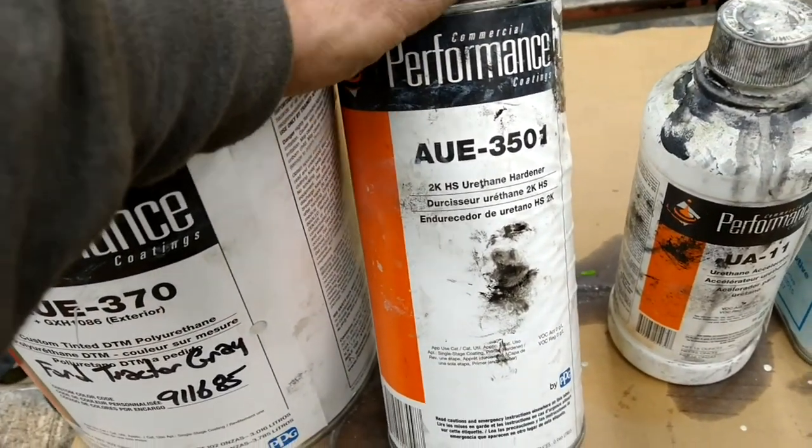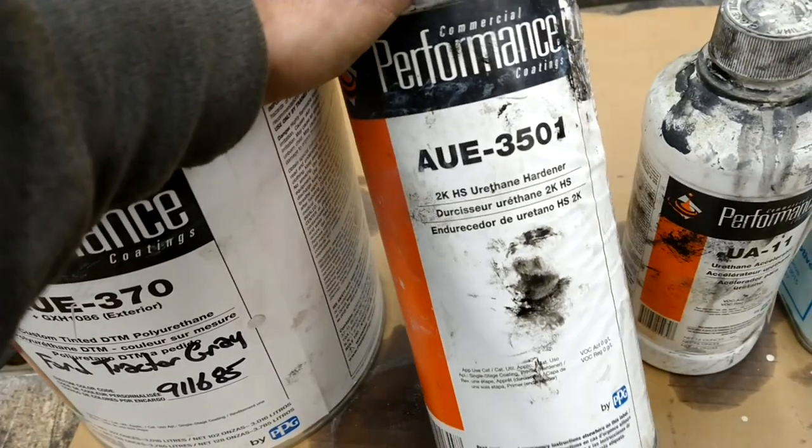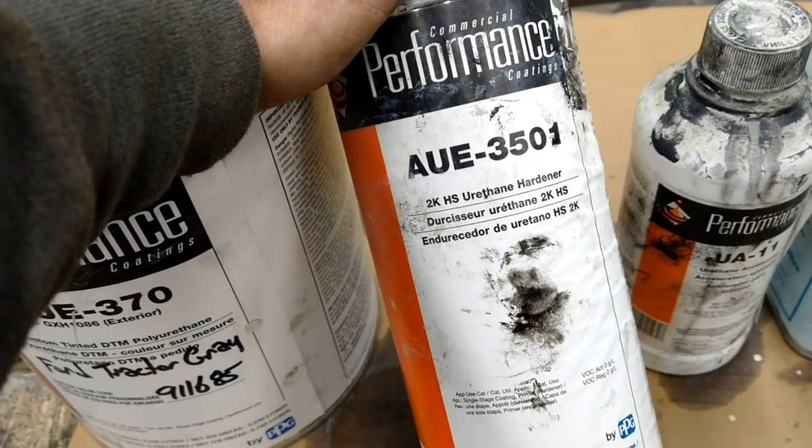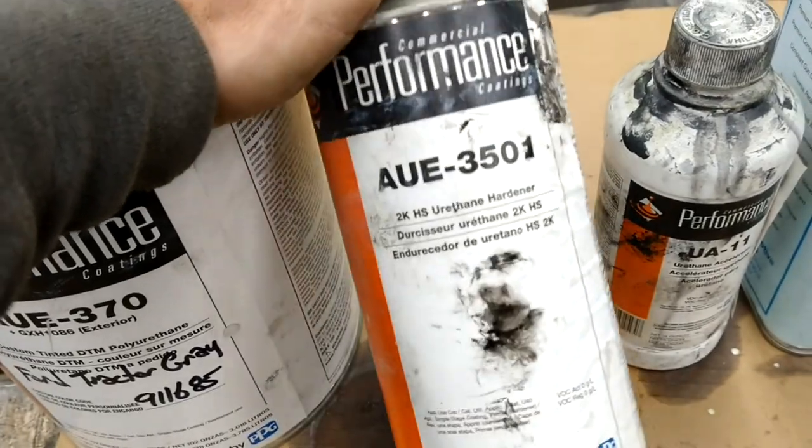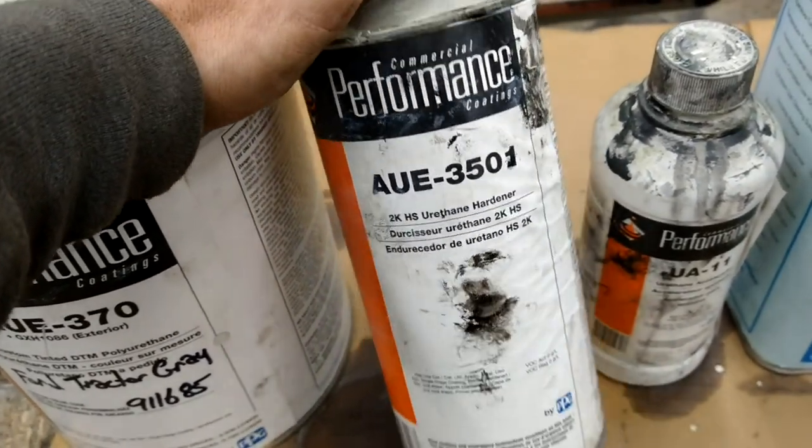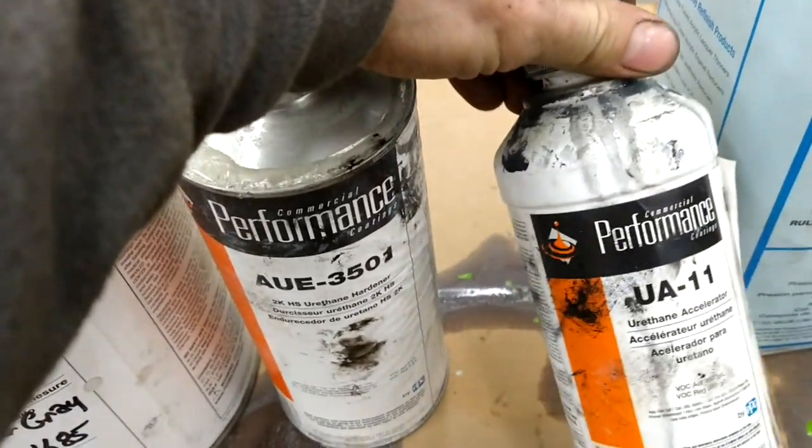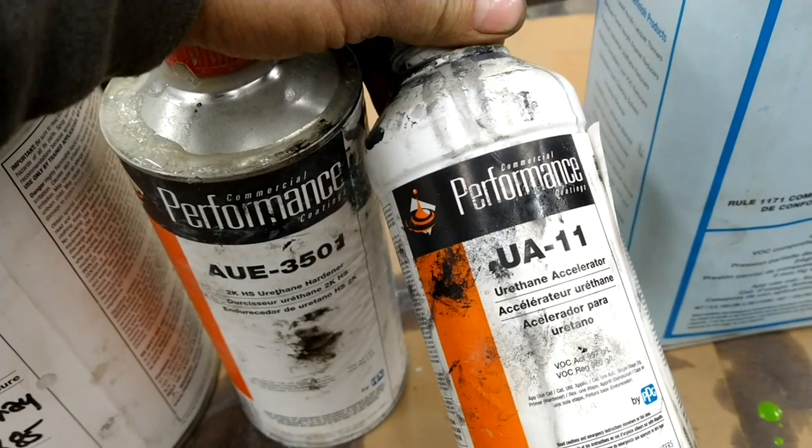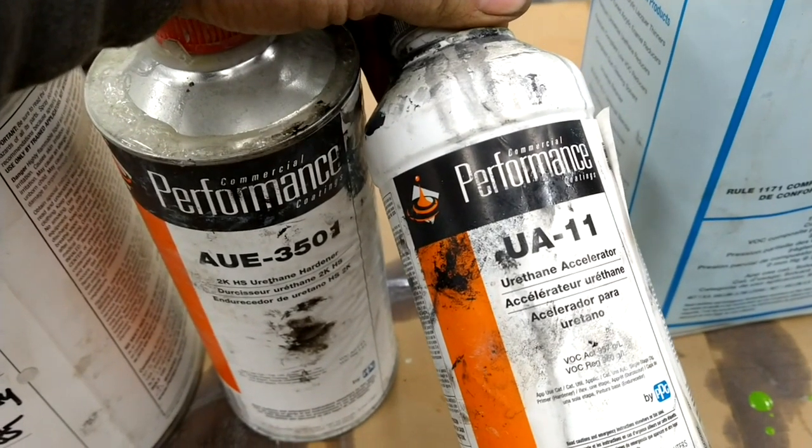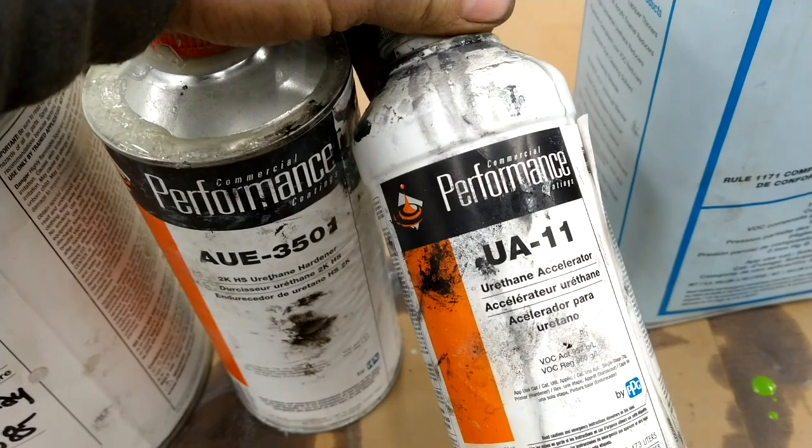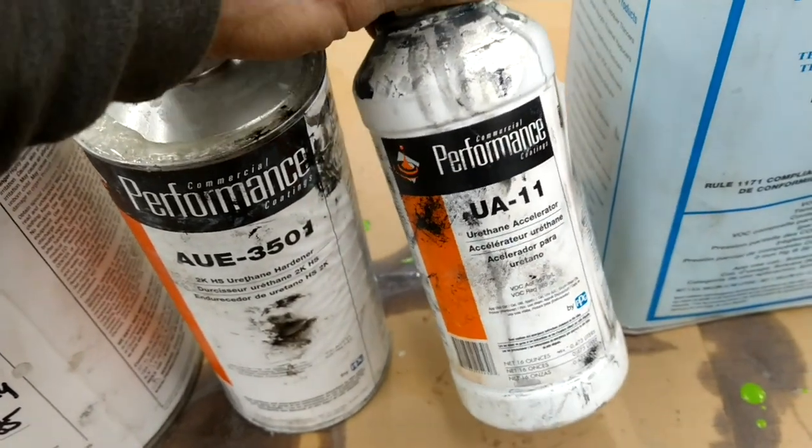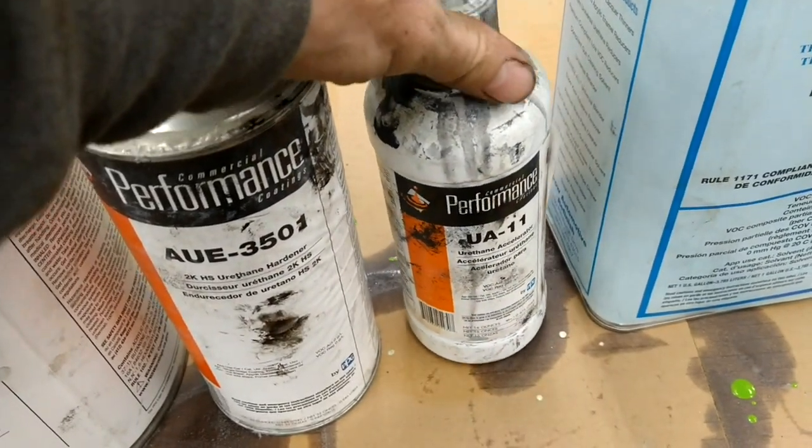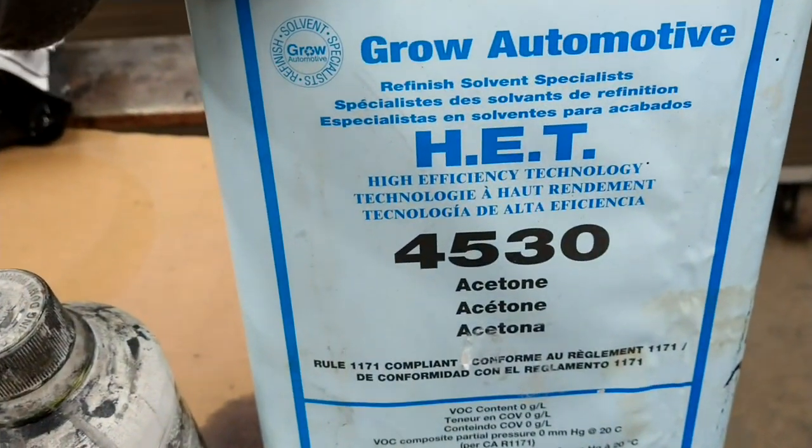I've got this 3501. This makes it really thick, but it's an excellent hardener. It makes it for a very durable finish, but it's hard to spray with this. This UA11 is an accelerator, so this will ensure that it's clear and dry tomorrow. It should be dry to touch in two hours, and by tomorrow morning it'll be done drying to the point where I can handle things. And, because this makes it so thick, I'm going to cut it with a little bit of acetone to get it to go through the spray gun.